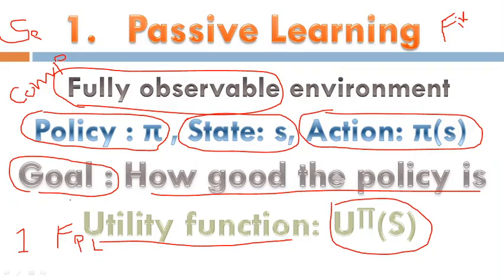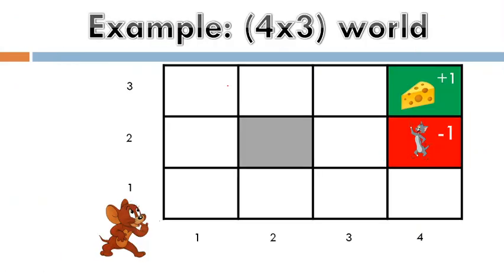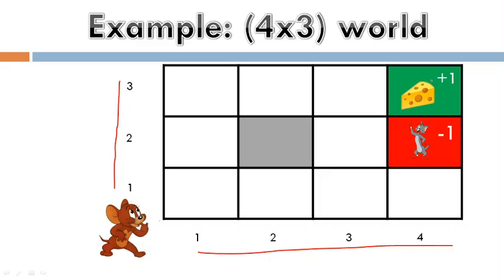As a best example, consider a four-by-three world: four columns and three rows. We use a Tom and Jerry game. Jerry wants to reach the cheese, which gives a positive reward of +1. Tom wants to catch Jerry, which gives a negative reward. The cheese is in one box and Tom is in another box — one is positive reward and the other is negative reward.